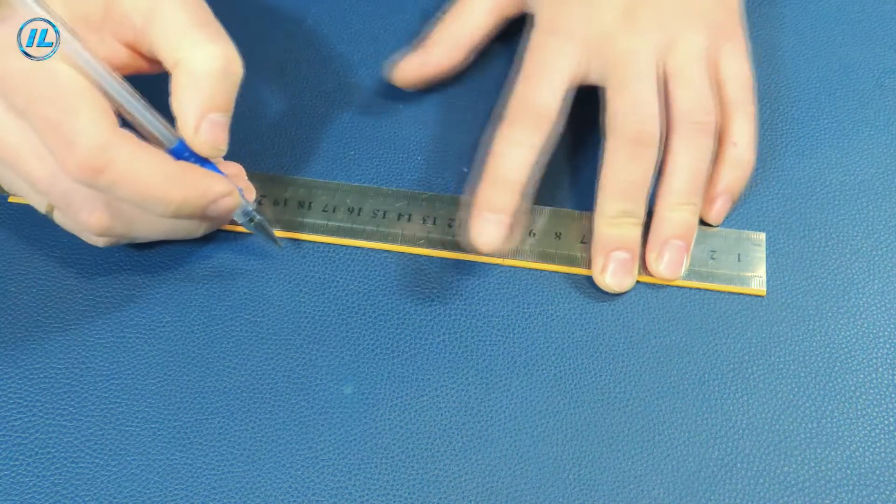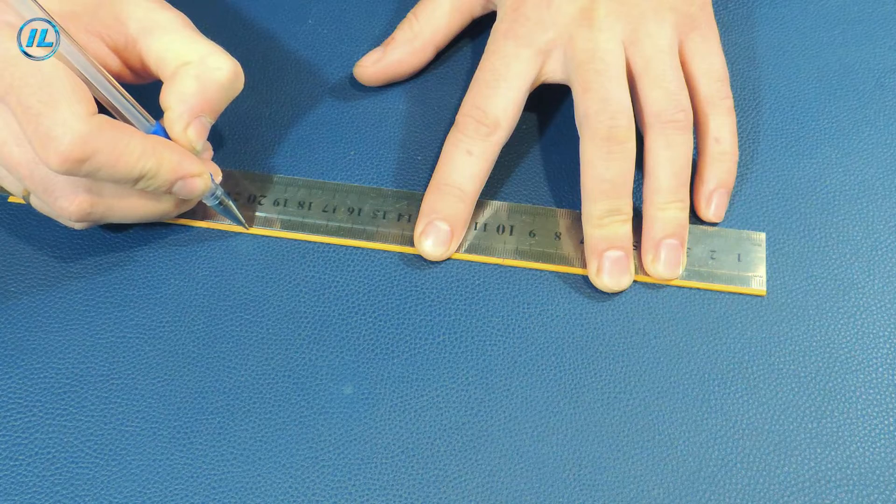I assembled the frame of the ionic raft from thin wooden slats, which I connected with thermal glue.